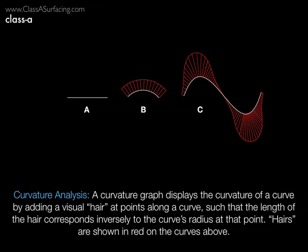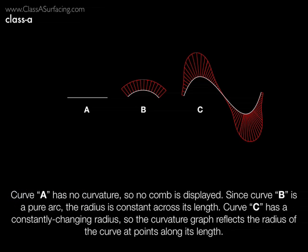Curve B has a constant radius, and therefore the combs are all of equal length. Curve C has a varying radius that inverts midway in what's known as an OG, or an inflection line, or a curvature inversion. Notice that the combs are always on the outside of the curve, opposite the radius.